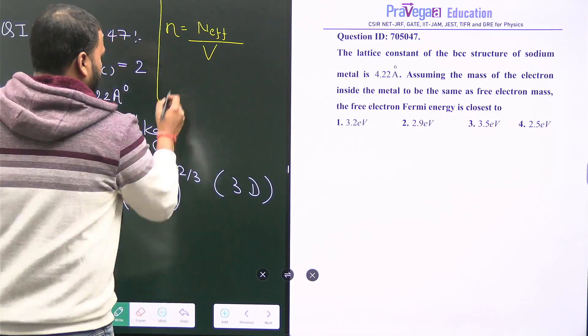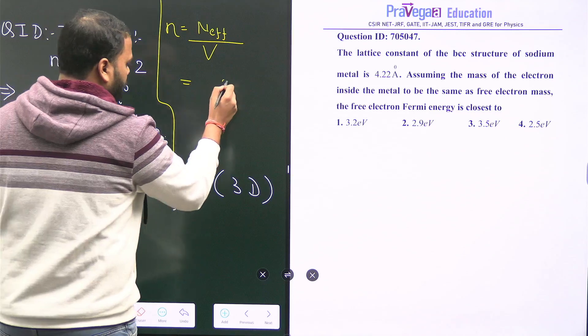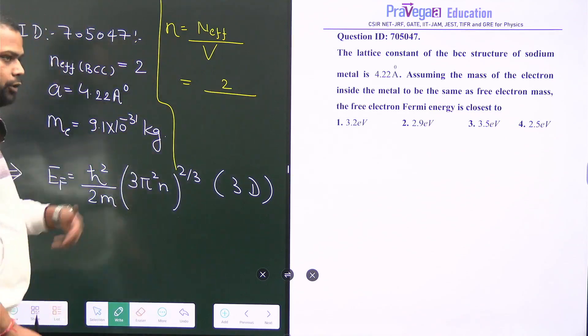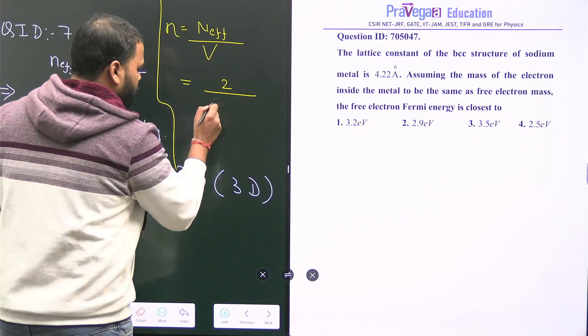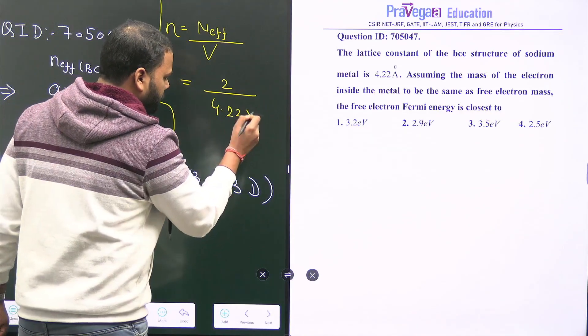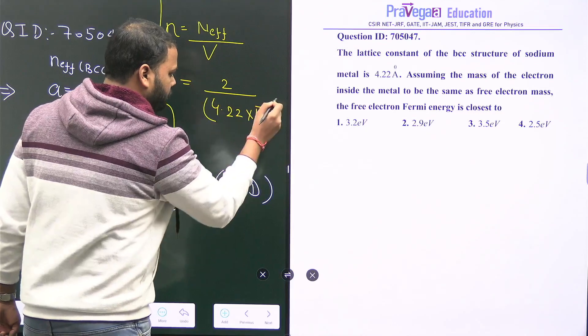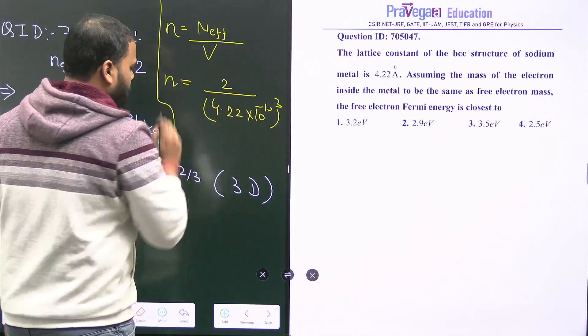Small n, the electron number density, is basically the effective number of atoms divided by the volume. For BCC it's 2, and the volume is a³ because it's a cubic crystal, where the lattice constant is 4.22 times 10 to the power minus 10 whole cubed.